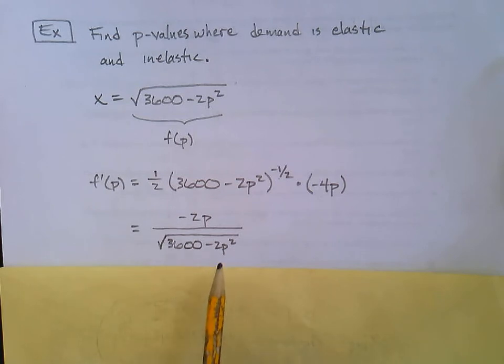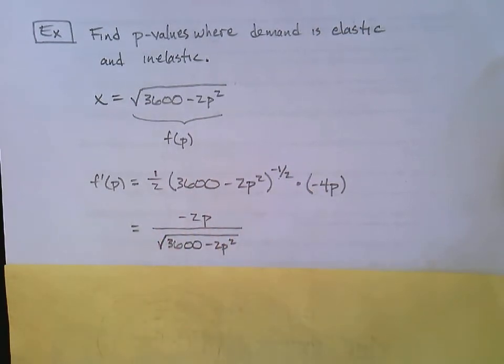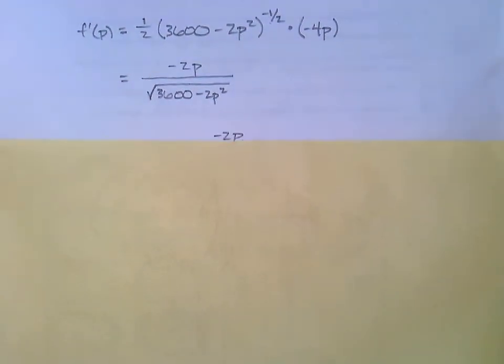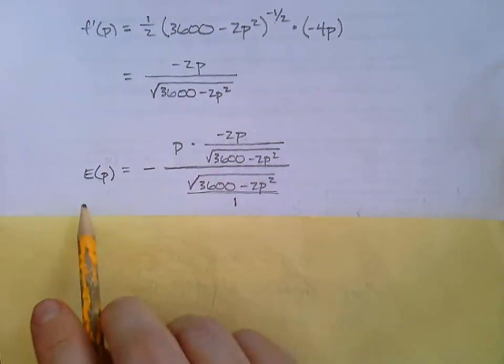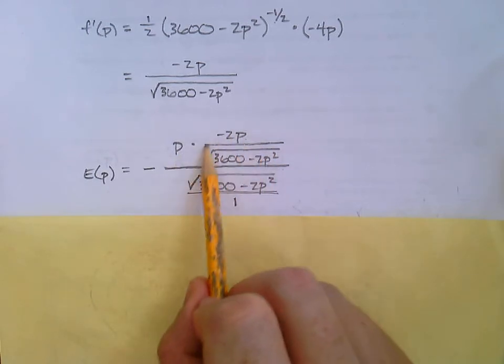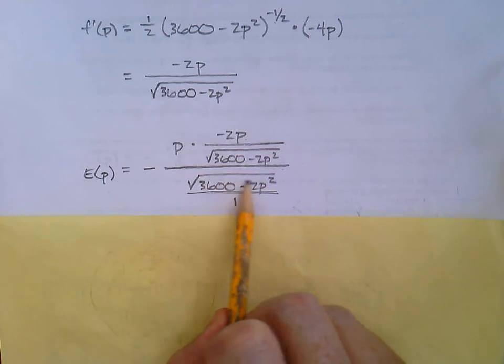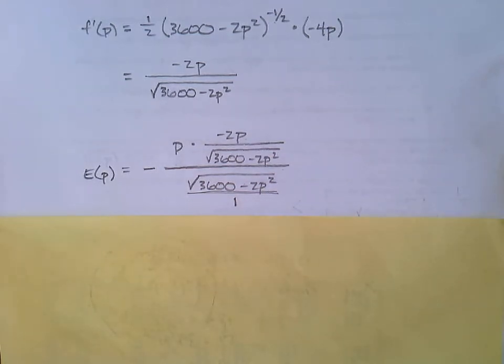Let's put together our e of p, and this one is a bit of a beast, but nothing we can't handle. e of p would equal negative p times our derivative over the original function. You notice I put that original function over 1, and that's going to help us out here.